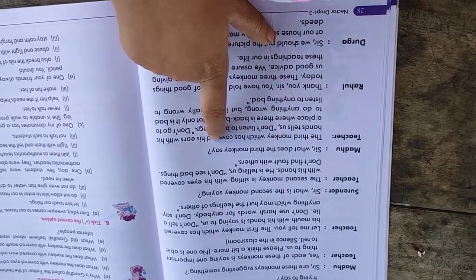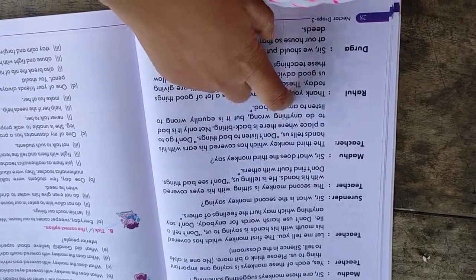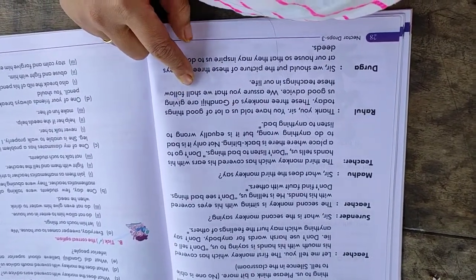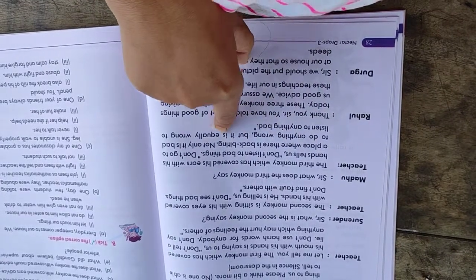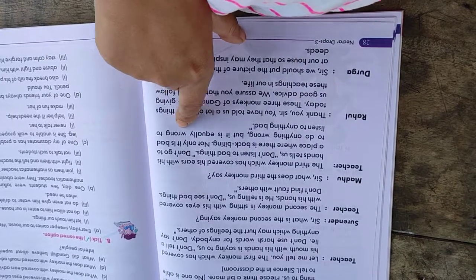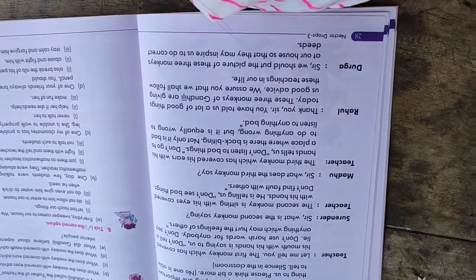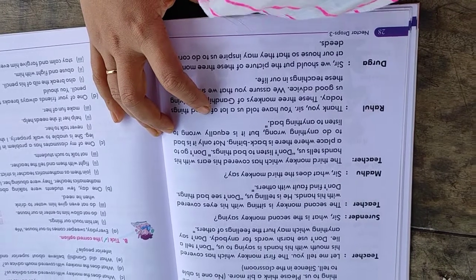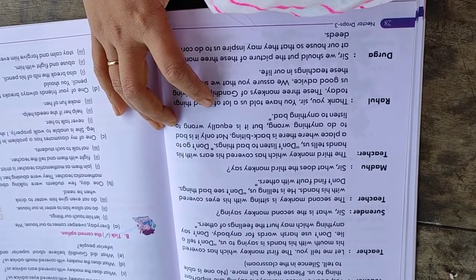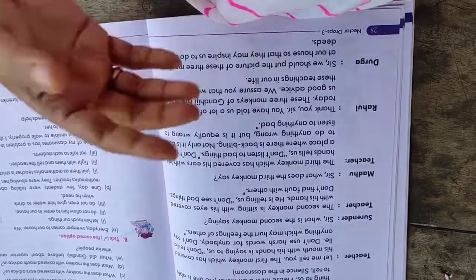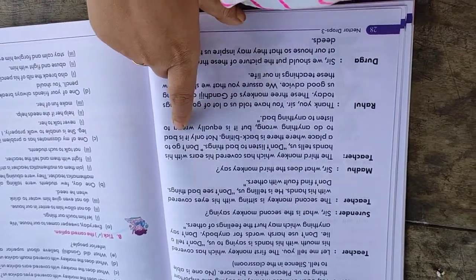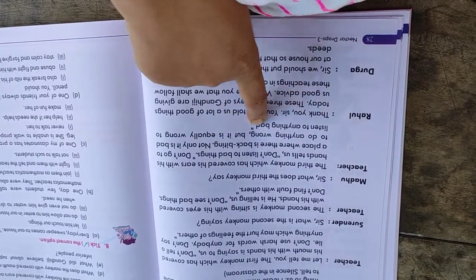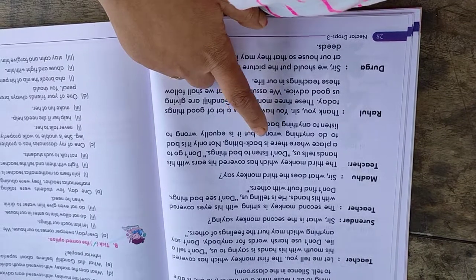Madhu asks, so what does the third monkey say? Teacher explains, the third monkey, which has covered his ears with his hands, tells us, don't listen to bad things, don't go to a place where there is backbiting. Not only is it bad to do anything wrong, but it is equally wrong to listen to anything bad.